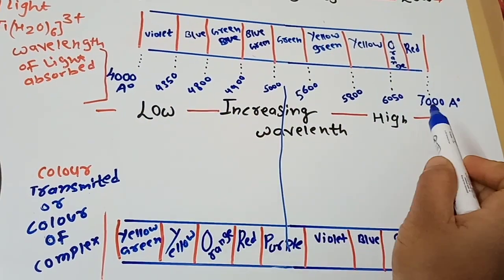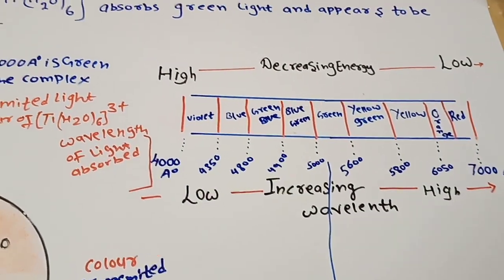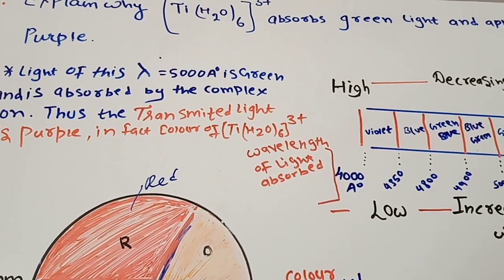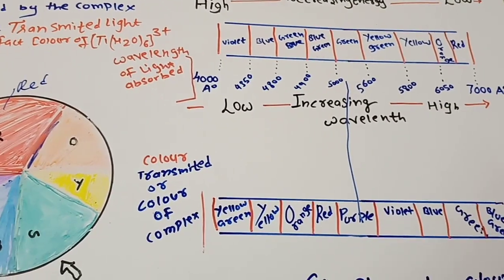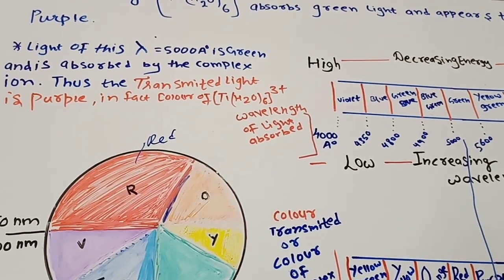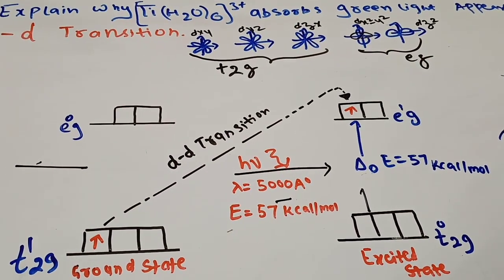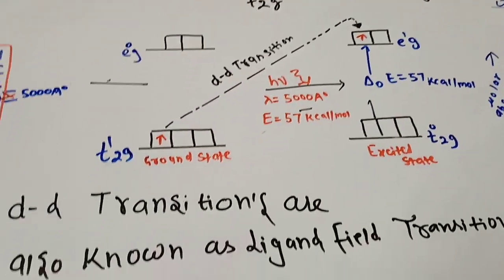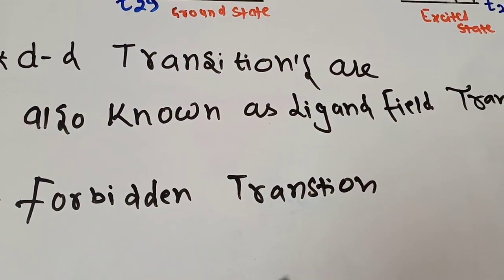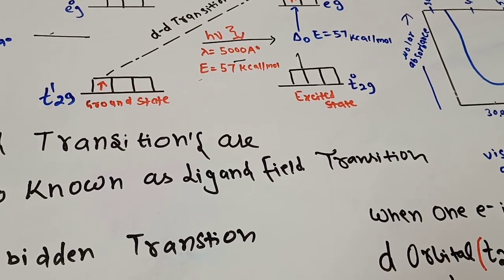Ti(H₂O)₆³⁺ absorbs green light and appears purple because the complementary color of green is purple. Due to D-D transitions, one electron is promoted from T2g to Eg via absorption of green wavelength light. D-D transitions are also known as ligand field transitions and are classified as forbidden transitions by selection rules — this is an important application of crystal field theory explaining the color of complexes.